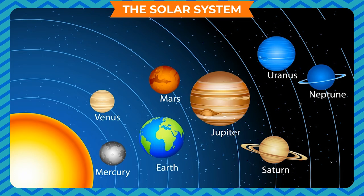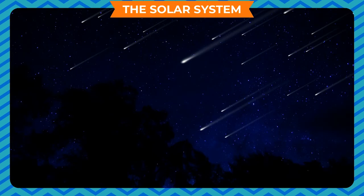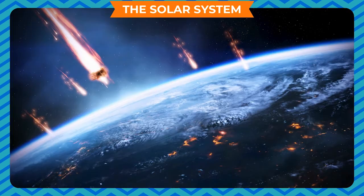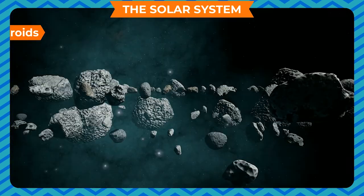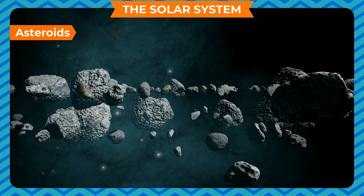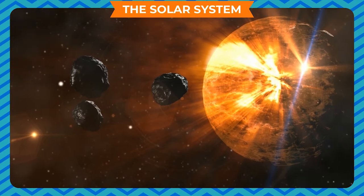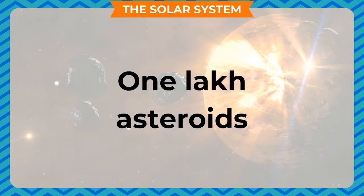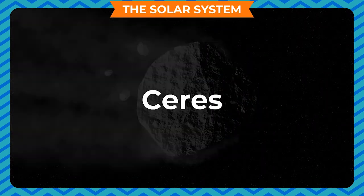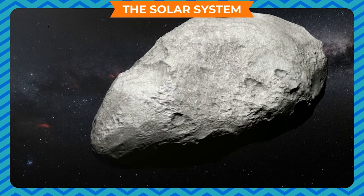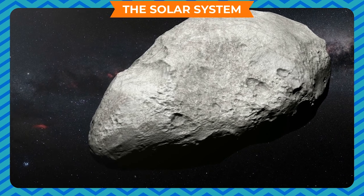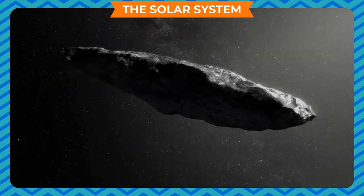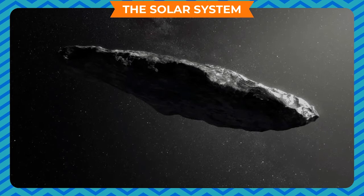Apart from eight planets, there are other members of the solar system as well. They are the asteroids, meteors, meteorites, comets, etc. Asteroids: They are rock pieces that revolve around the sun between the orbits of Mars and Jupiter. There are nearly one lakh asteroids, the largest one being Ceres. Asteroids are believed to be pieces of much larger planets which might have broken due to the gravitational pull of Jupiter.